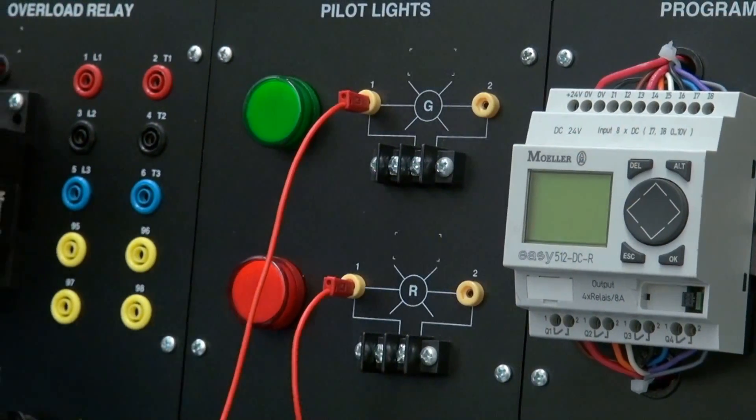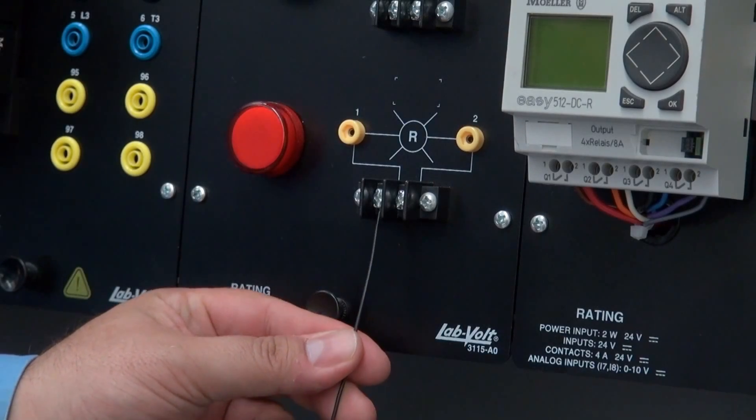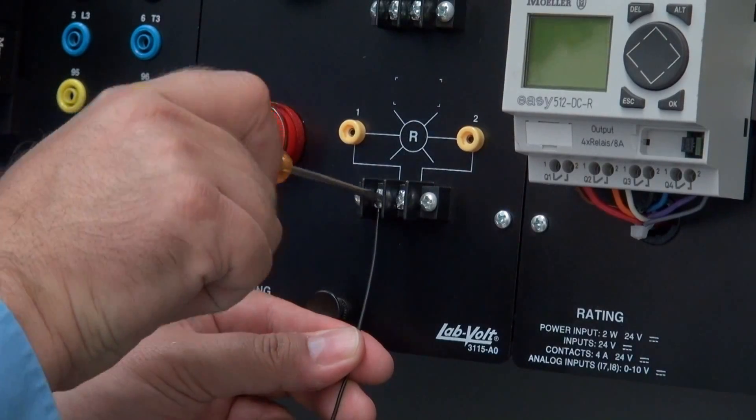Instructors have the choice of banana jacks or cabinet-type cabling for the low voltage, adding another potential skill to students.